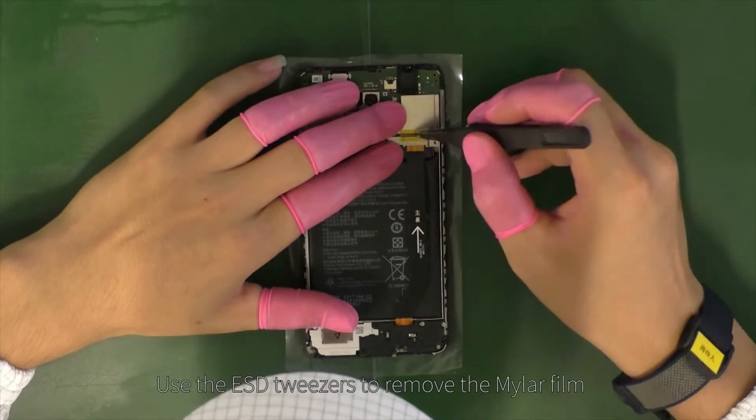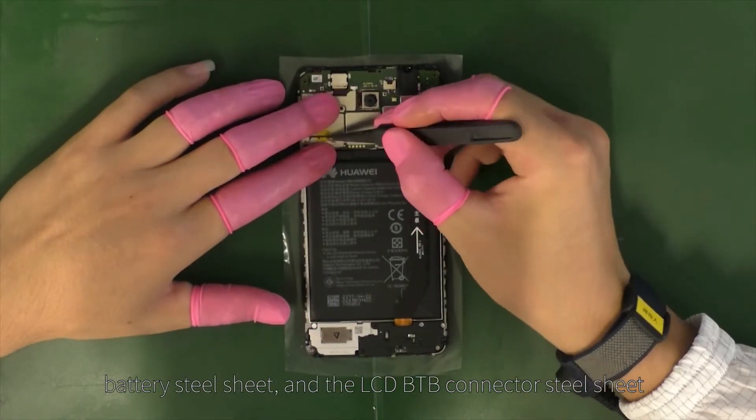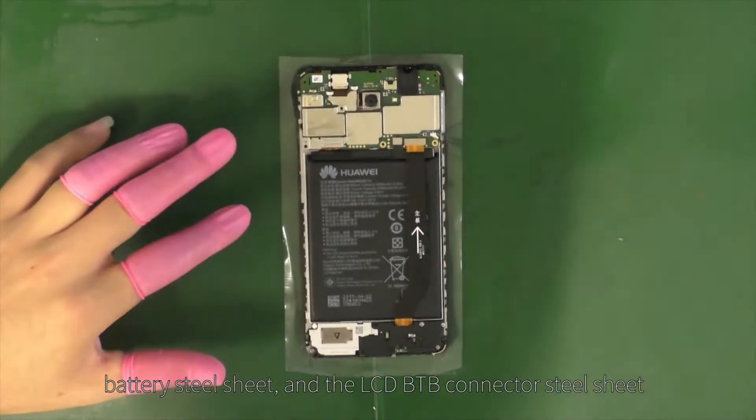Use the ESD tweezers to remove the mylar film, battery steel sheet, and the LCD B2B connector steel sheet.